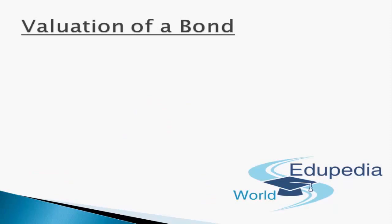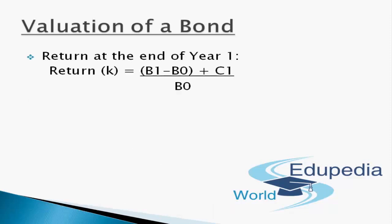Consider that we invest in a bond today at a current price of B0. Also consider that the bond gives a coupon rate of C1 in the next one year, and assuming we would sell this bond at the end of one year at B1. We can calculate the return from the bond with the formula: K equals B1 minus B0 plus C1, divided by B0.